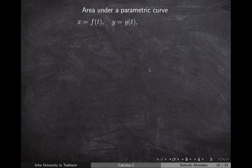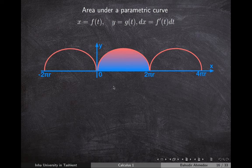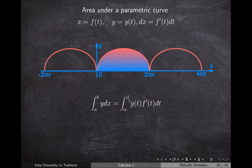Let's discuss how to find areas under a parametric curve given by these equations. The differential of x is dx = f'(t) dt. We used to find areas under curves by integrating y with respect to x from a to b. I'll substitute y with g(t) and dx with f'(t) dt, giving the integral of g(t)·f'(t) dt. The range for t goes from α to β, corresponding to the range of x.